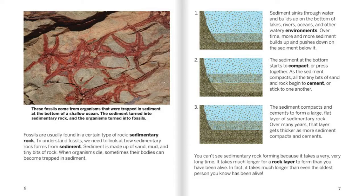The sediment at the bottom starts to compact, or press together. As the sediment compacts, all the tiny bits of sand and rock begin to cement, or stick to one another. The sediment compacts and cements to form a large, flat layer of sedimentary rock. Over many years, that layer gets thicker as more sediment compacts and cements. You can't see sedimentary rock forming, because it takes a very, very long time — much longer than even the oldest person you know has been alive.